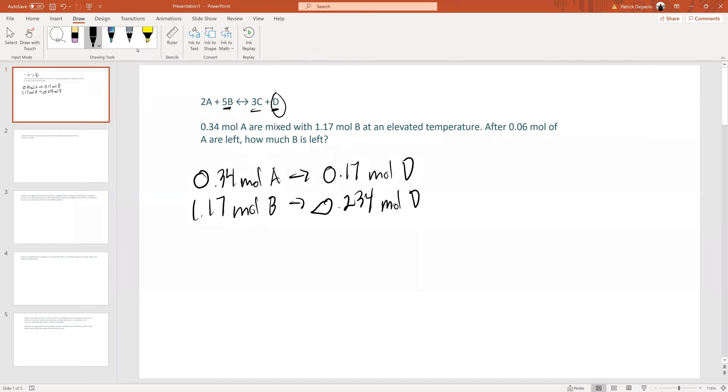We know from limiting reactant, whichever reactant is responsible for producing the least amount of product, which in this case is A, only making 0.17 moles of D, this one is the limiting reactant. So we know this will run out first.